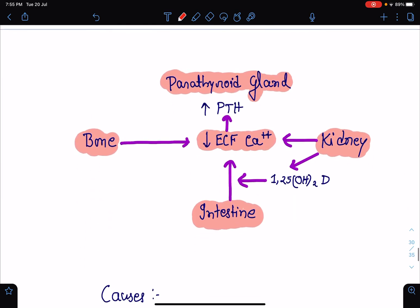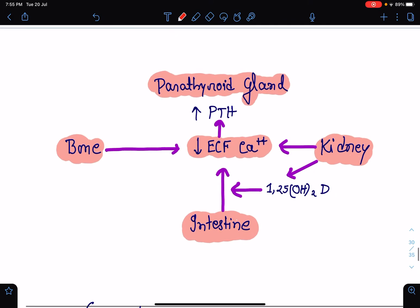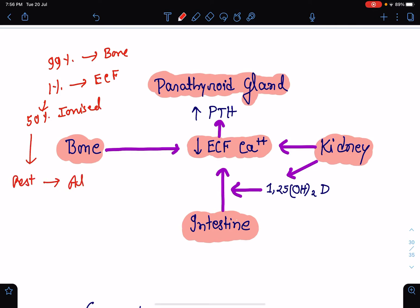Let's see how the calcium balance is maintained in our body. But before that, I want to mention that 99% of our body's calcium remains in the bone and only 1% calcium remains in the extracellular fluid. Among the 1% calcium, 50% is in ionized form and the rest is bound to albumin.